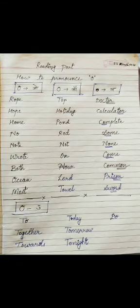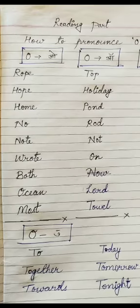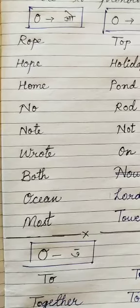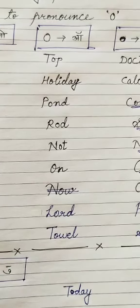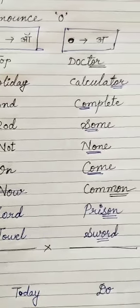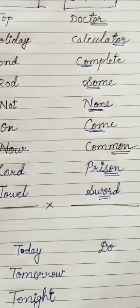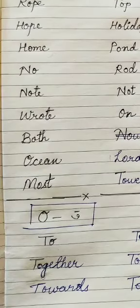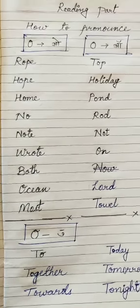Hi friends, today we will read how to pronounce O. O के alag-alag sounds होते हैं, जैसे O हम short vowel sound के रूप में भी यूज करते हैं, O हम long vowel sounds के रूप में यूज करते हैं, O को हम अ के रूप में भी प्रनाउंस करते हैं, और O को उ के रूप में भी प्रनाउंस करते हैं.